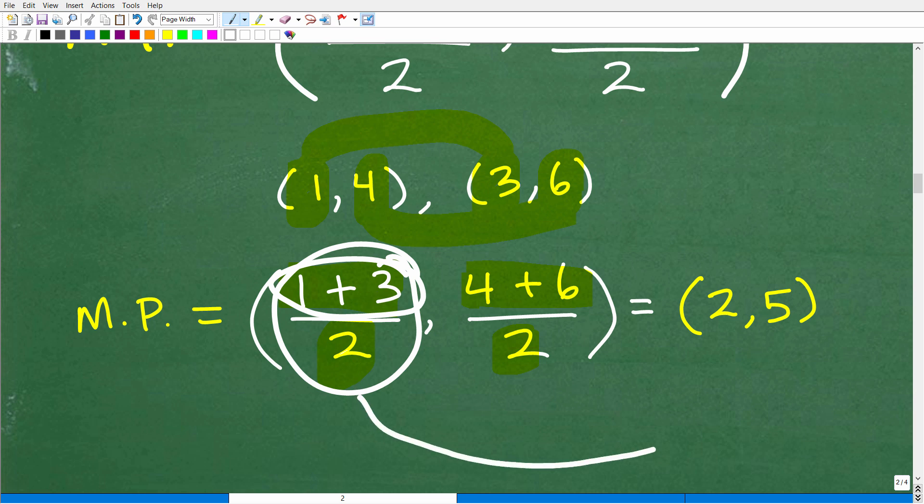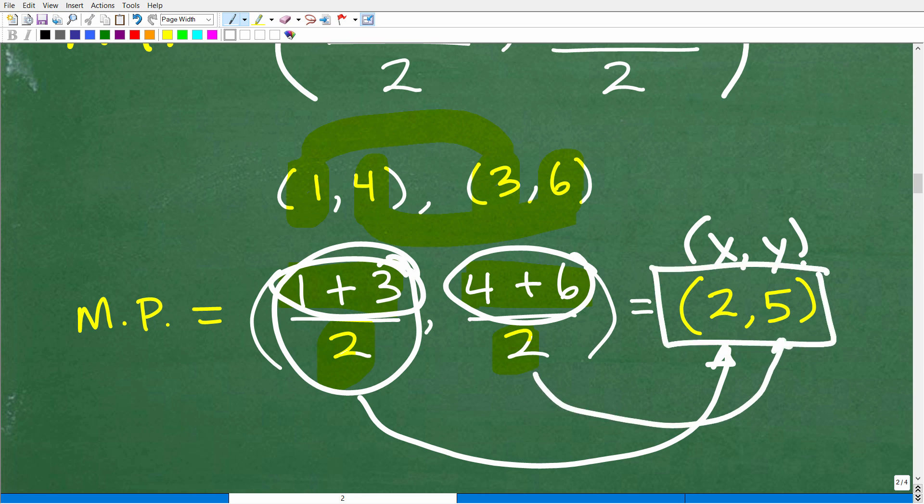4 divided by 2 is 2. So the midpoint for our x, y coordinate here is going to be, our x coordinate is going to be 2. And then here, our y is going to be 4 plus 6 is what? 10. 10 divided by 2 is 5. So there you go. There is the midpoint. 2, 5.